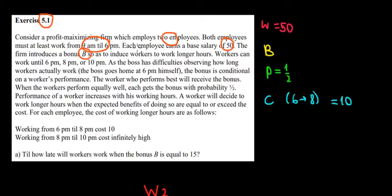The base salary for every worker is 50 euros. There is a bonus that the worker can get if he works until 8 p.m. or 10 p.m. The boss cannot observe how much the workers are going to work, so the bonus is based on the conditional performance of the worker. The worker who does the best will receive the bonus. When they perform equally well, the probability of getting the bonus is 1 over 2.